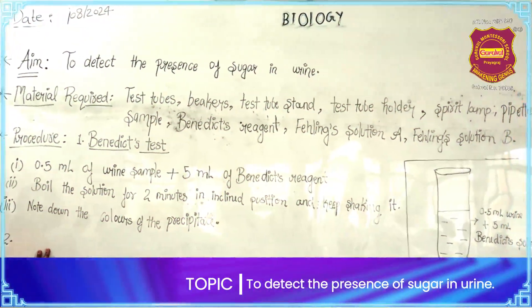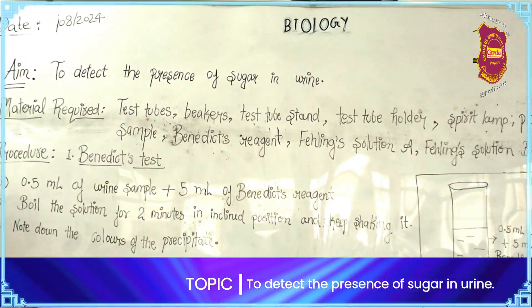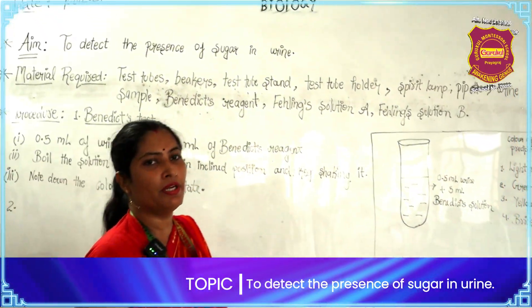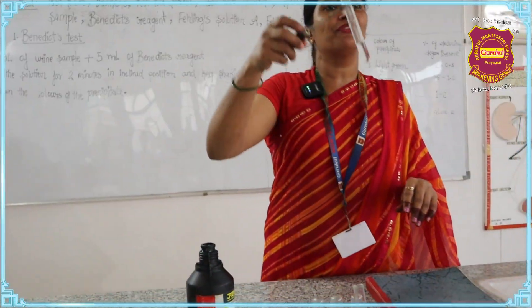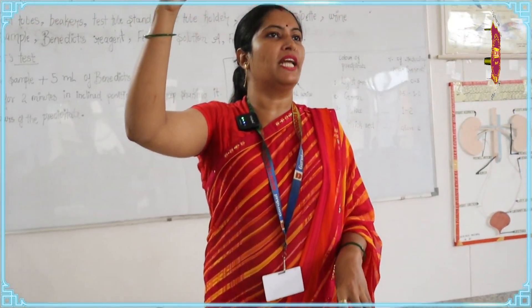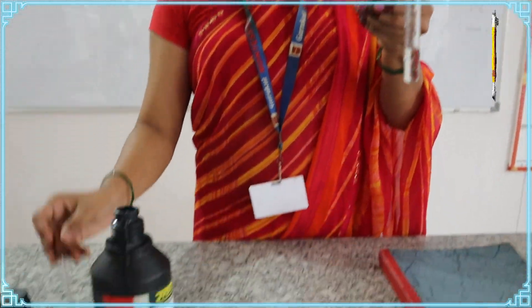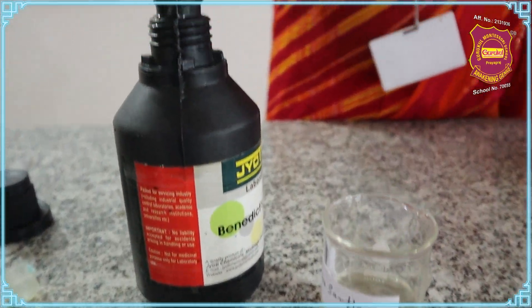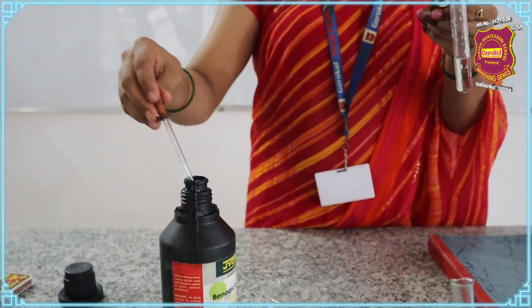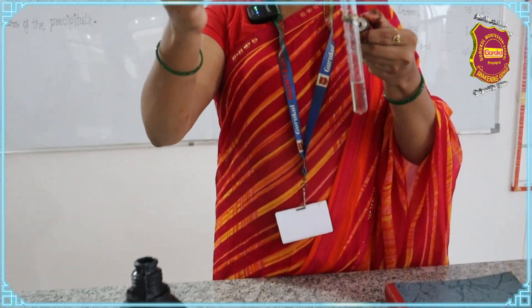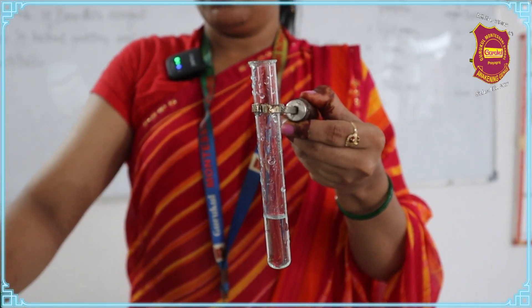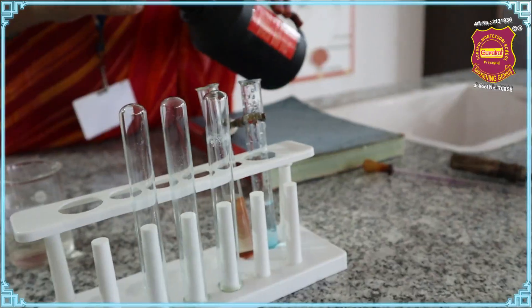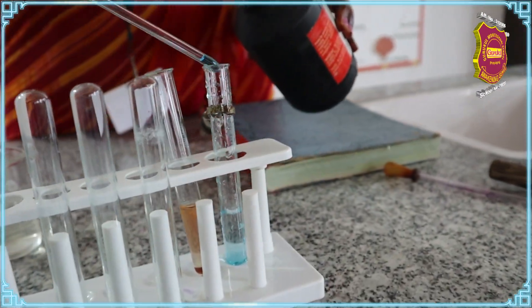We are testing for the presence of sugar in the urine sample. The urine sample is given on your table. Take 5 ml of the sample in the test tube, and afterwards add at least 2 ml of Benedict's solution over it with the help of this dropper.